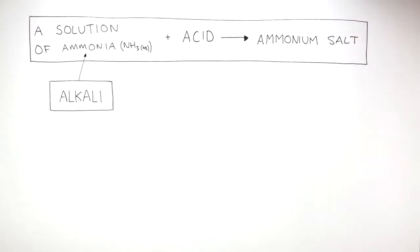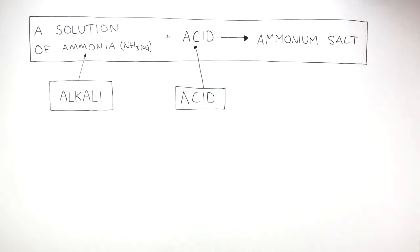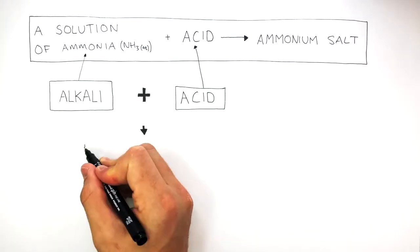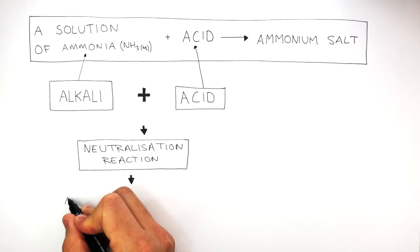Ammonia is an alkali, and the acid used is acidic. So when ammonia reacts with the acid, this is an example of a neutralization reaction.